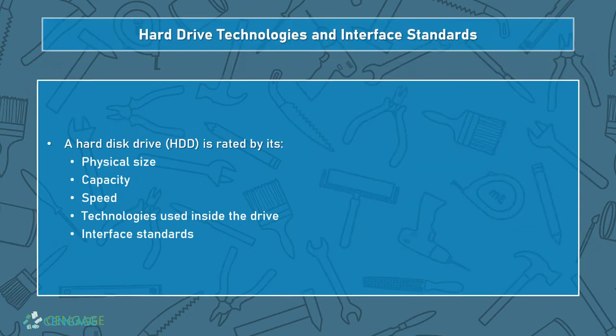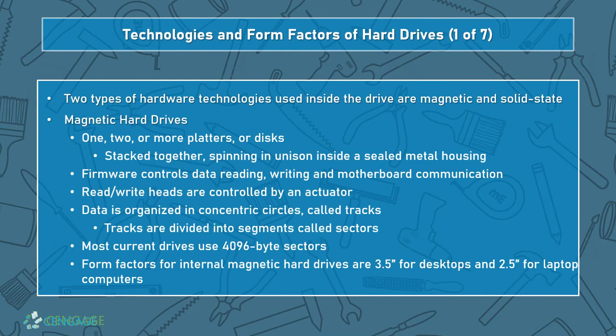A hard disk drive is traditionally rated by five metrics: its physical size or form factor, its capacity, its speed, the technology used inside the drive, and the interface standards that connect it to the computer. Two types of hardware technologies used inside most drives now are magnetic and solid state. Magnetic drives have multiple platters stacked together spinning in unison inside a sealed metal housing. The firmware on the logic control board controls data read, write, and motherboard communication. The read-write heads are controlled by a magnetic actuator that pivots an arm back and forth. Data is organized in concentric circles called tracks, and these tracks are perpendicularly divided into segments called sectors. Most current drives use sectors about 4 kilobytes in size.